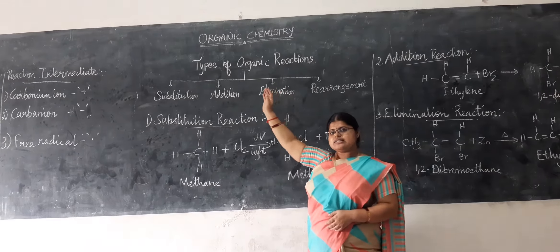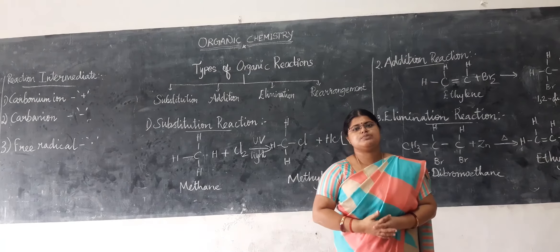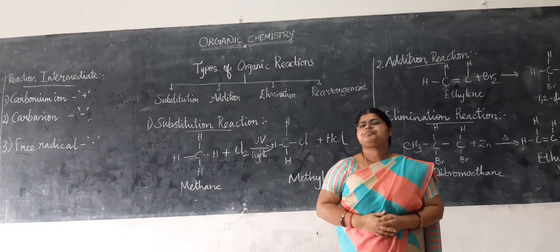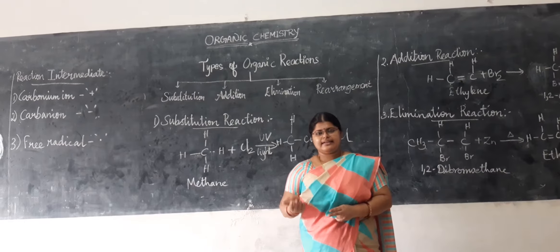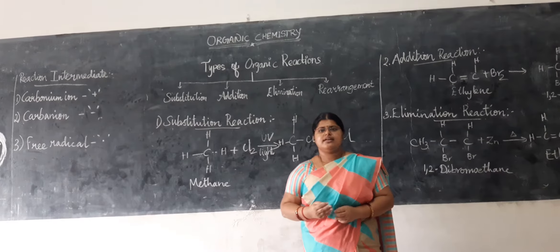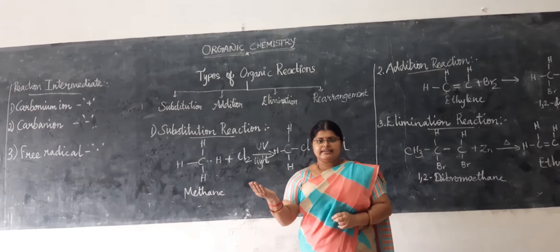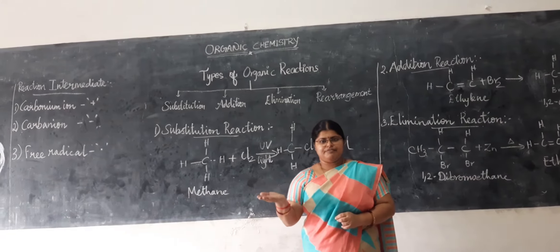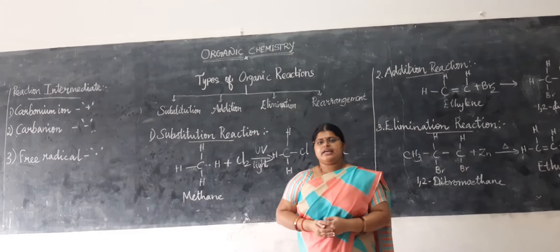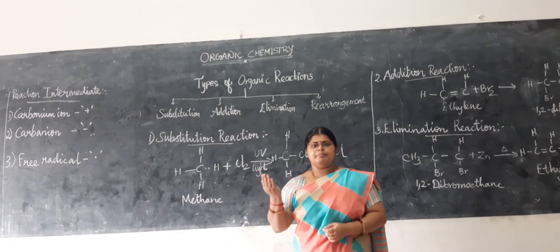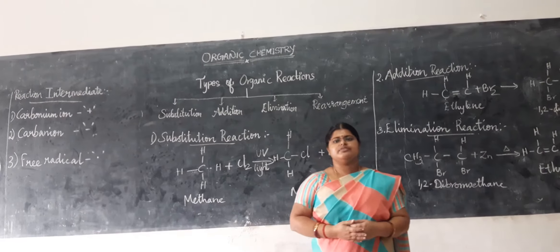Before going to see these organic reactions, we need to know what is a reaction and what is present in the reaction. A reaction presents two things: reactants and the product. In the reactants, there are two things present — substrate and the reagent. The reactants are present on the left hand side and the product is present on the right hand side. In organic chemistry, these reactants undergo making and breaking of bonds, and finally we get a product.